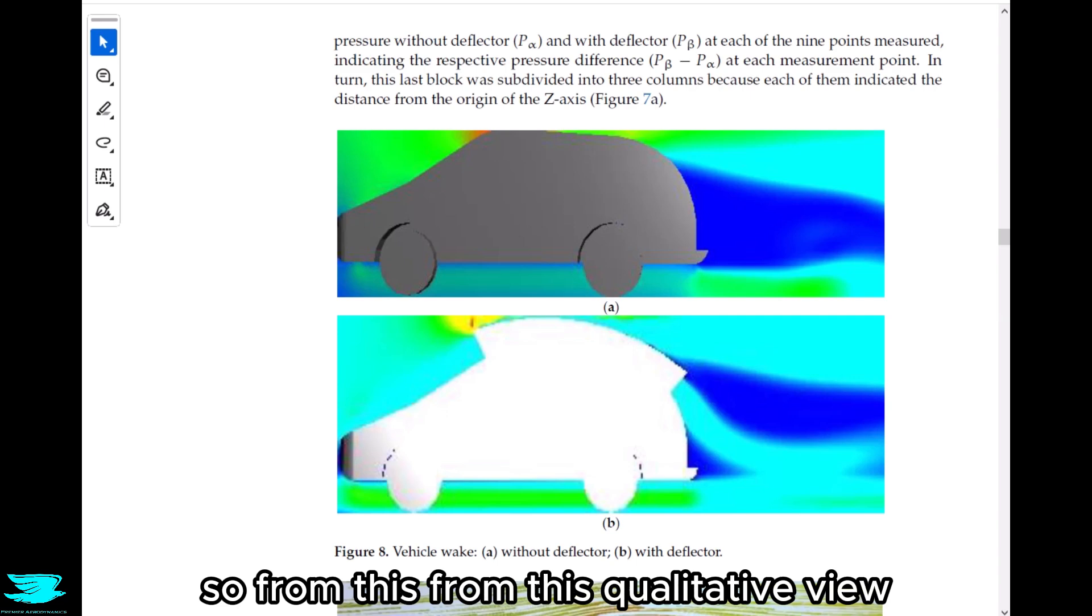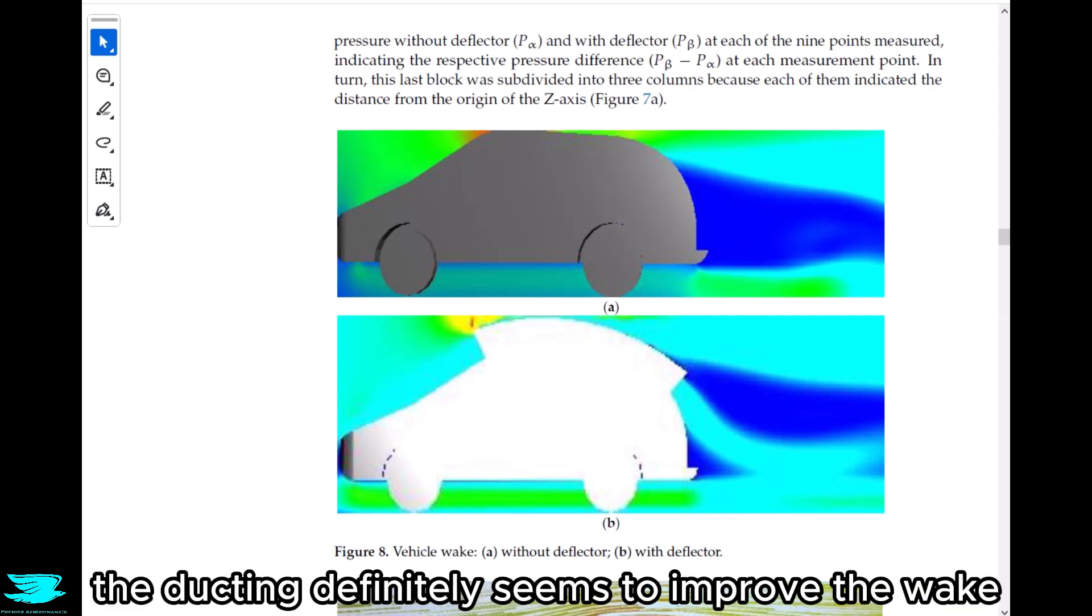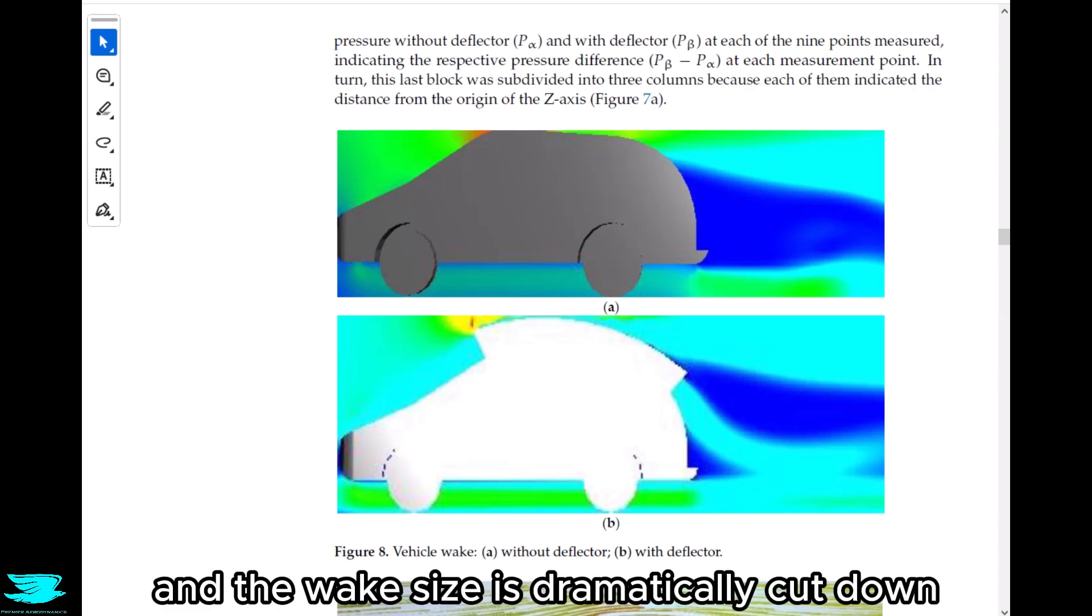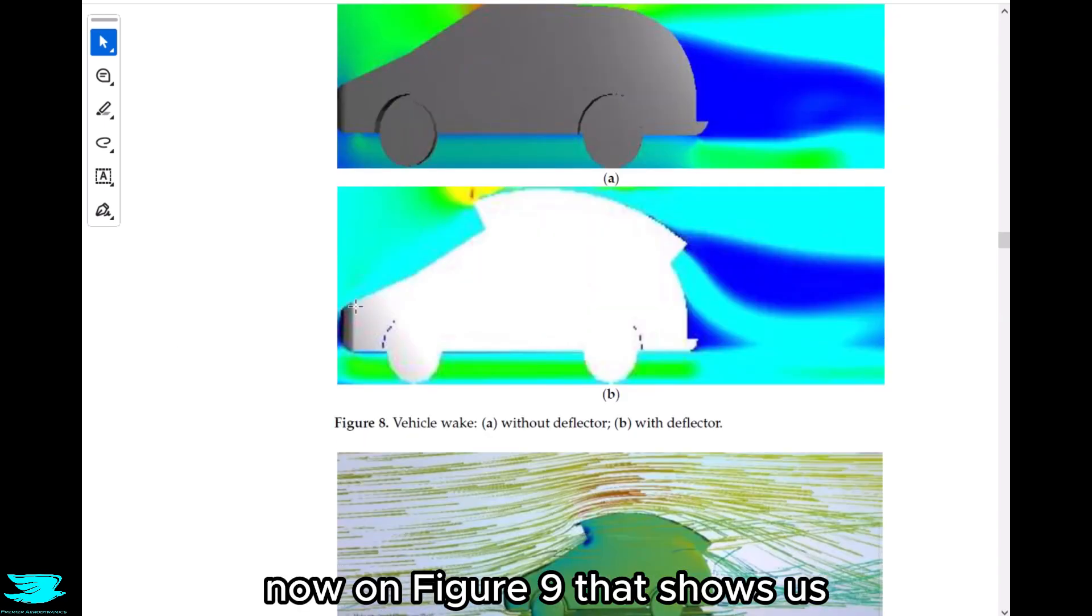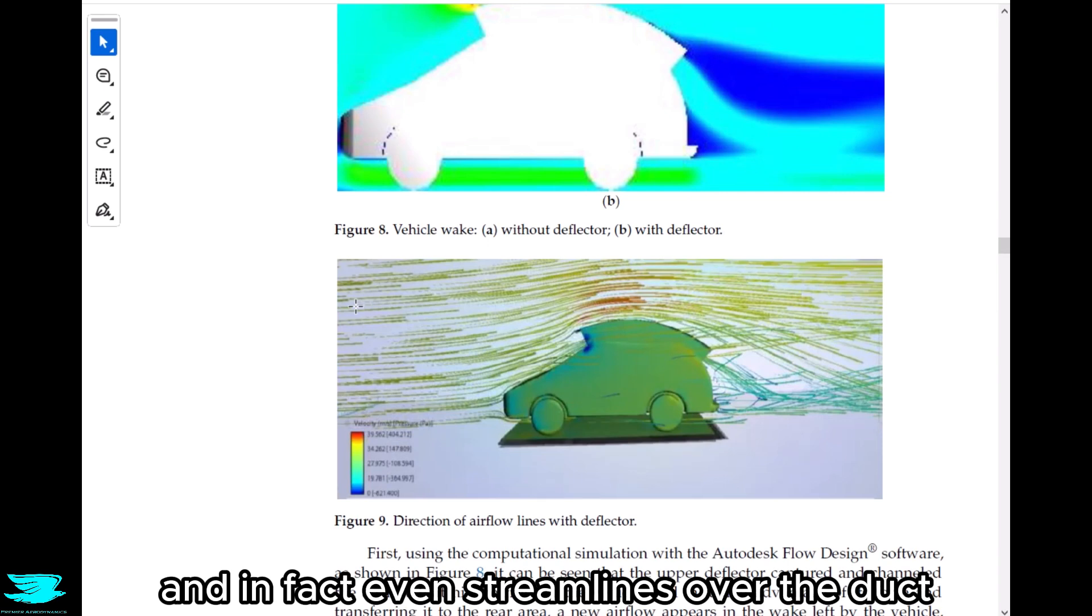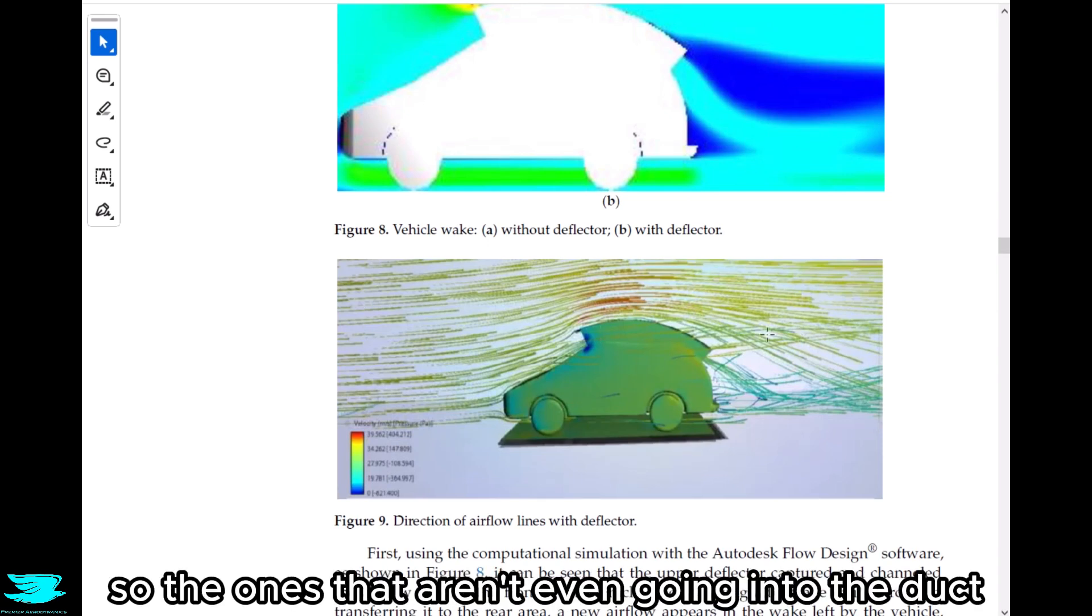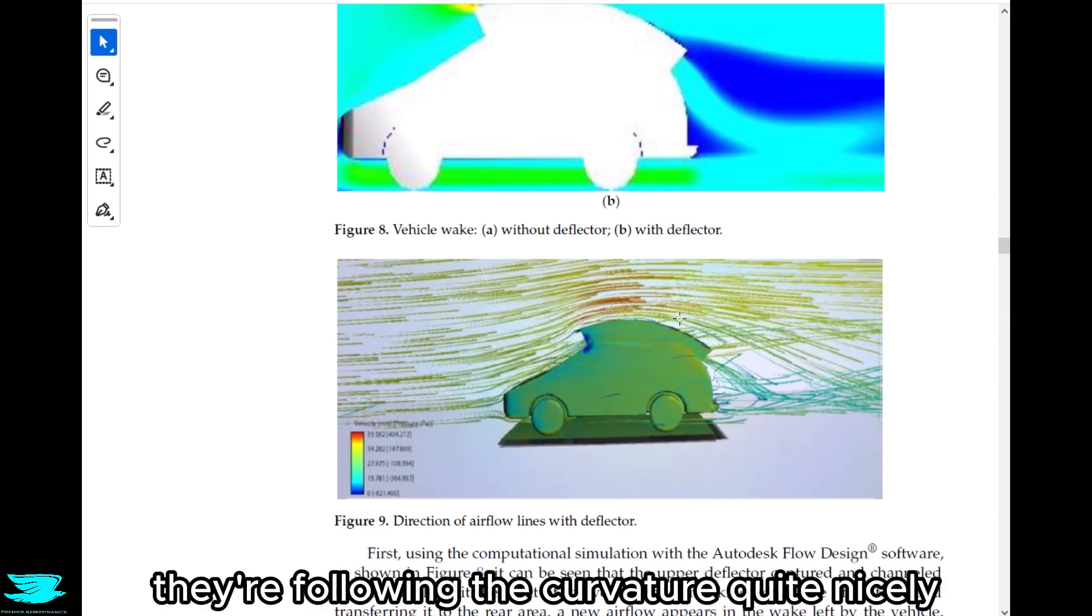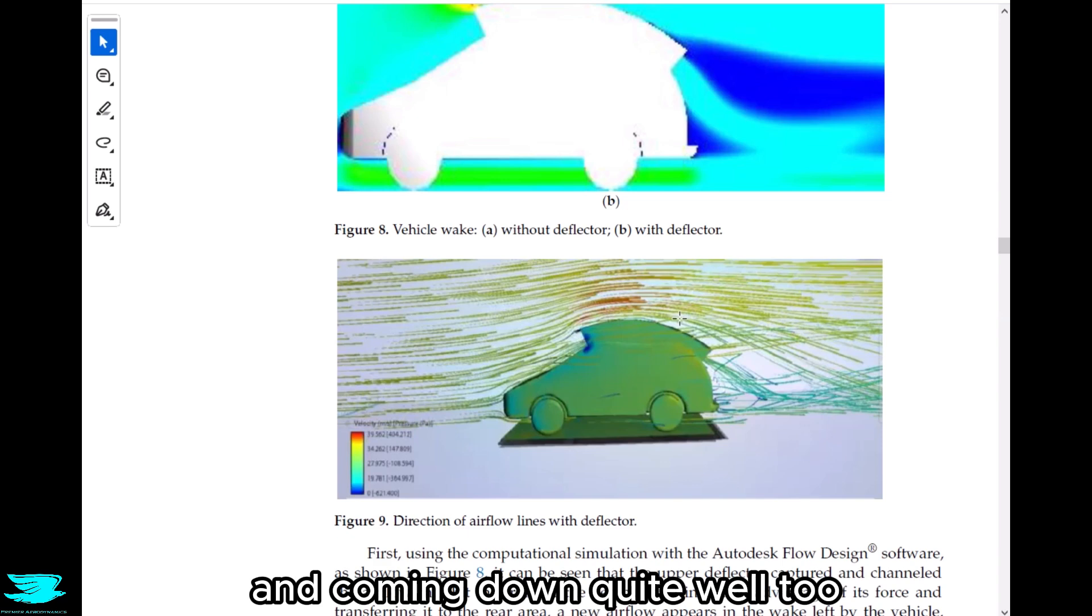So from this qualitative view, the ducting definitely seems to improve the wake with faster moving flow there. That's very promising, and the wake size is dramatically cut down. In figure 9, that shows us just how well the streamlines are jettisoned down. In fact, even streamlines over the duct are also flowing downwards quite well. The ones that aren't even going into the duct but on top are following the curvature quite nicely and coming down quite well too.